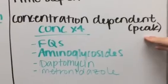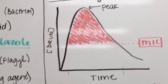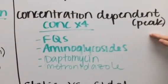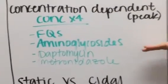Then we have our concentration dependent, which is really going to focus on the peak. As long as we have some of the drug in the system we're going to be killing bacteria. It's just a matter of how much of the drug do we have. If we have more of the drug, we're going to be killing more of the bacteria.